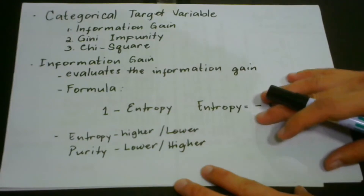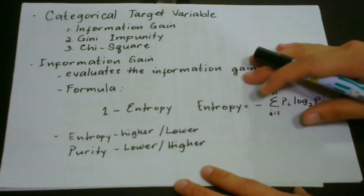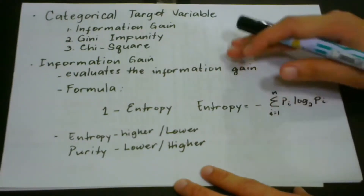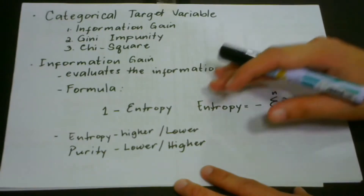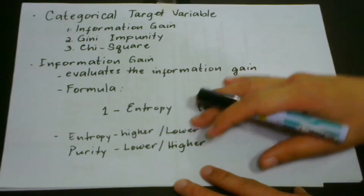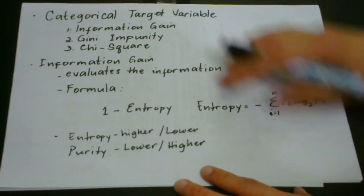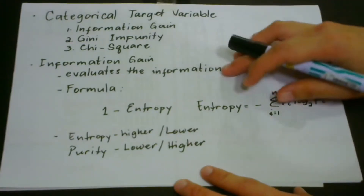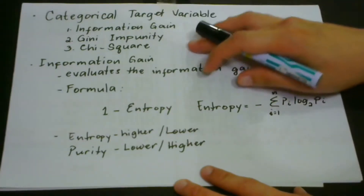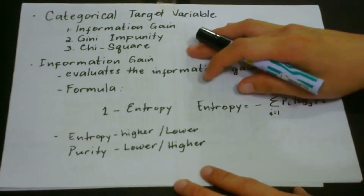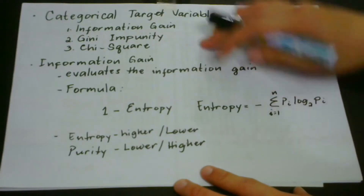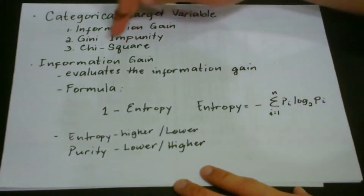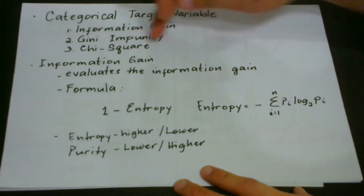In our last lesson, we talked about continuous target variable and had a deeper understanding of how we use reduction in variance. This time, we're going to talk about categorical target variable, and we actually have three techniques on how to split the data: information gain, Gini impurity, and chi-square.